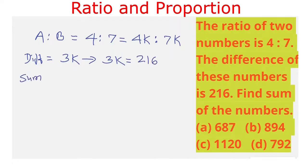And sum is 7k plus 4k is 11k. So it is 216 multiplied by 11k divided by 3k. The k in numerator and denominator is cancelled. And 3 divides 216 for 72 times. And 72 multiplied by 11 is equal to 792.